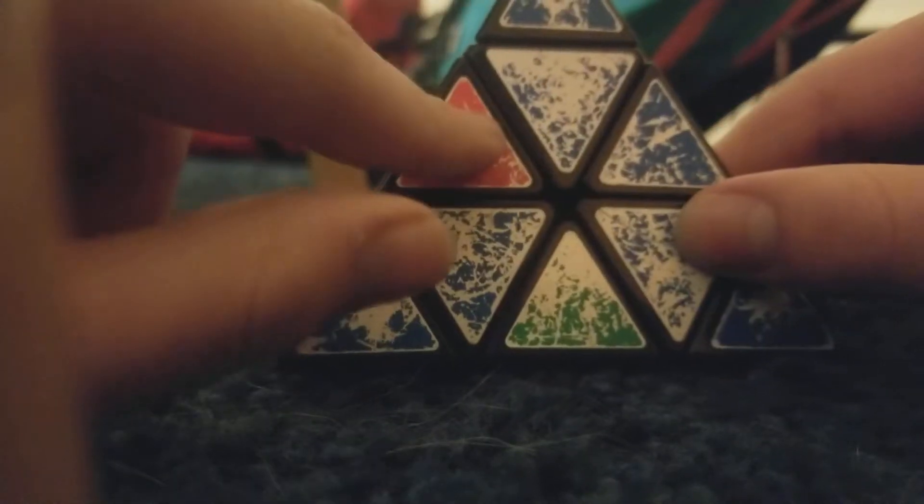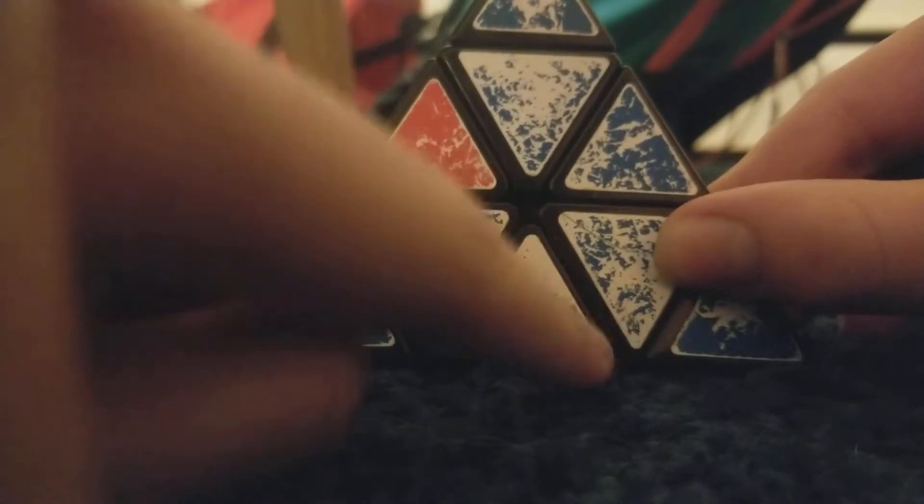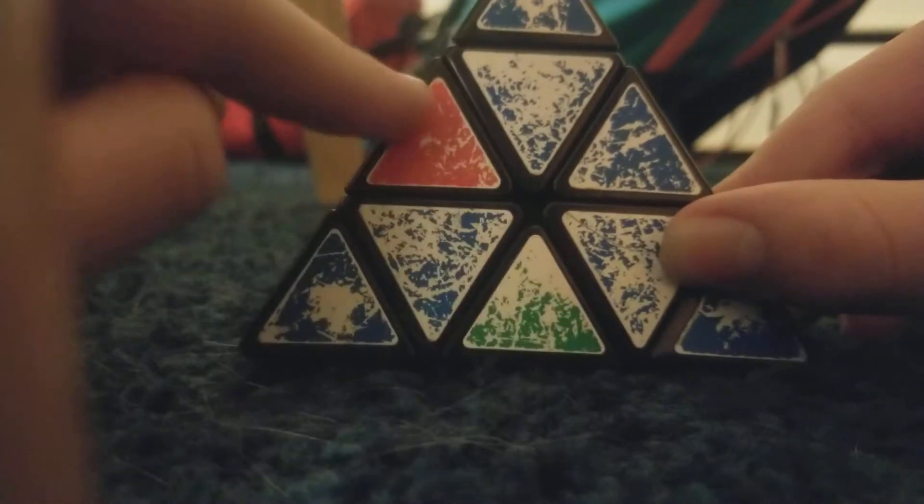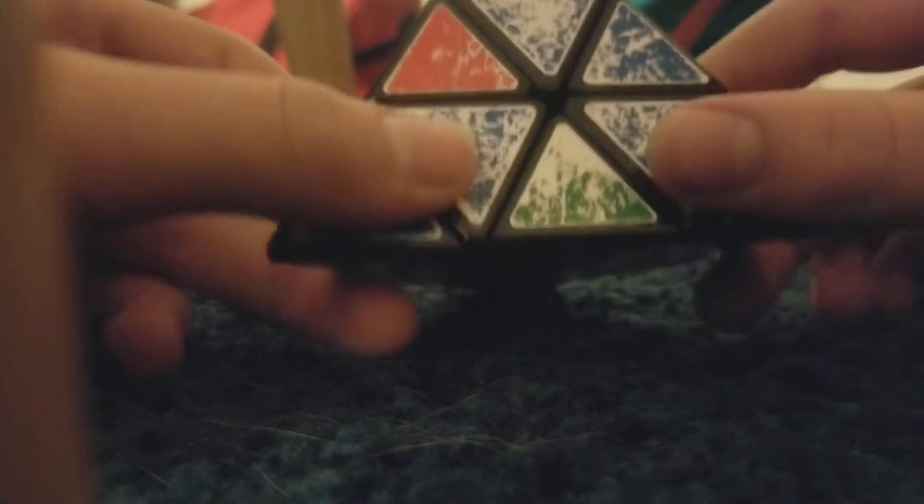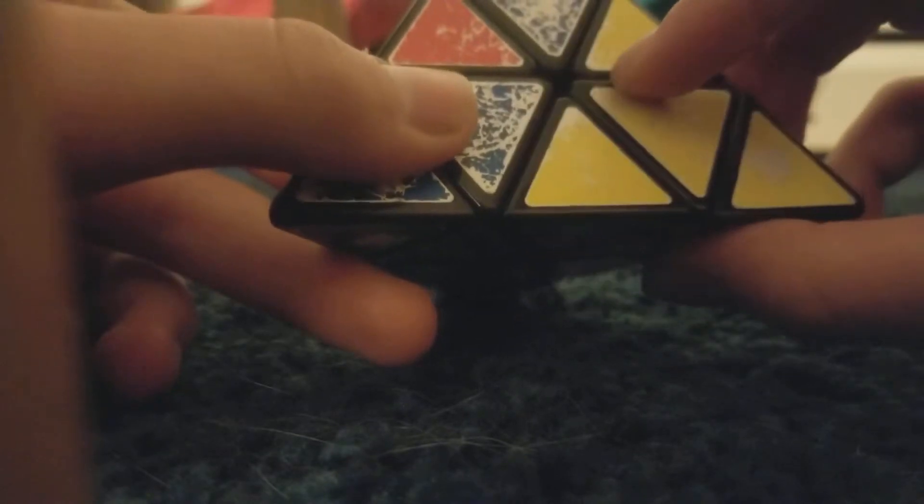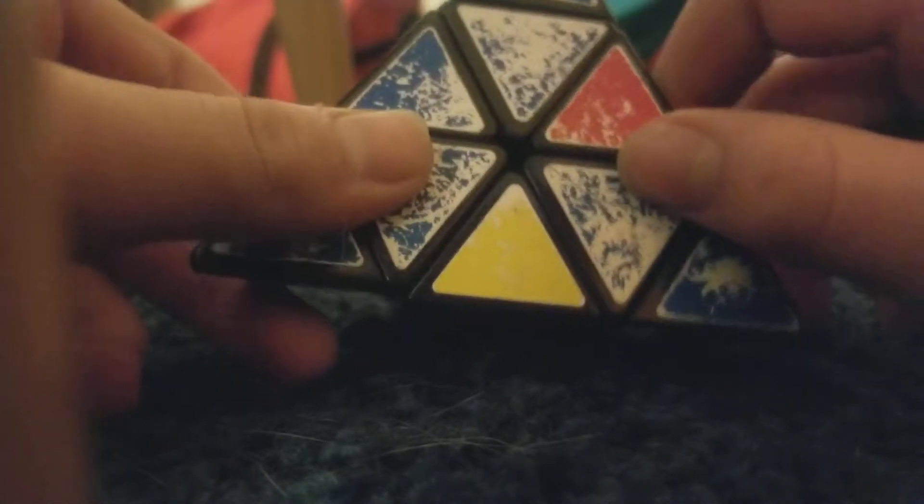So you want to have it so that the middle on the left and the middle on the bottom pieces are right here. And you want to do this, this little algorithm. Right down, left down, right up, left up.